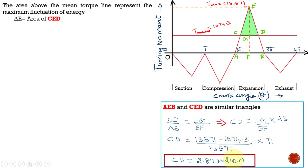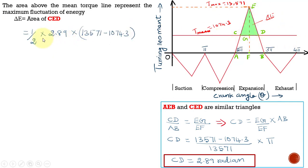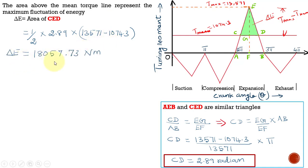Using CD = 3.89 radians and height H = T_max − T_mean, we calculate the area of triangle CED to find the maximum fluctuation of energy. Substituting these values, ΔE = 18,057.73 Nm.